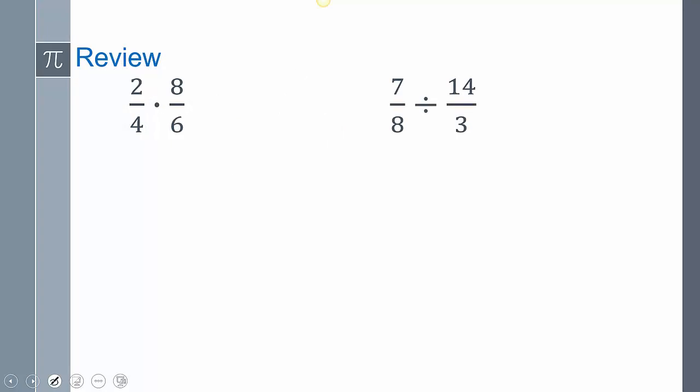Just a quick review. Remember when we're multiplying and dividing any type of fraction, if we factor it, we can multiply these together so we can combine it. So this is 2 times 8 over 4 times 6. Remember, like factors reduce.